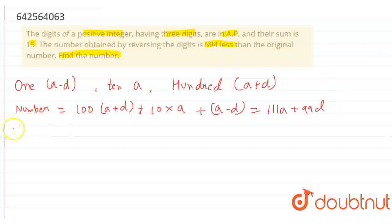And same, what is the reversing number? The reversing number is 100 times A minus D plus 10 times A plus A plus D. By solving this, we will get 111A minus 99D.